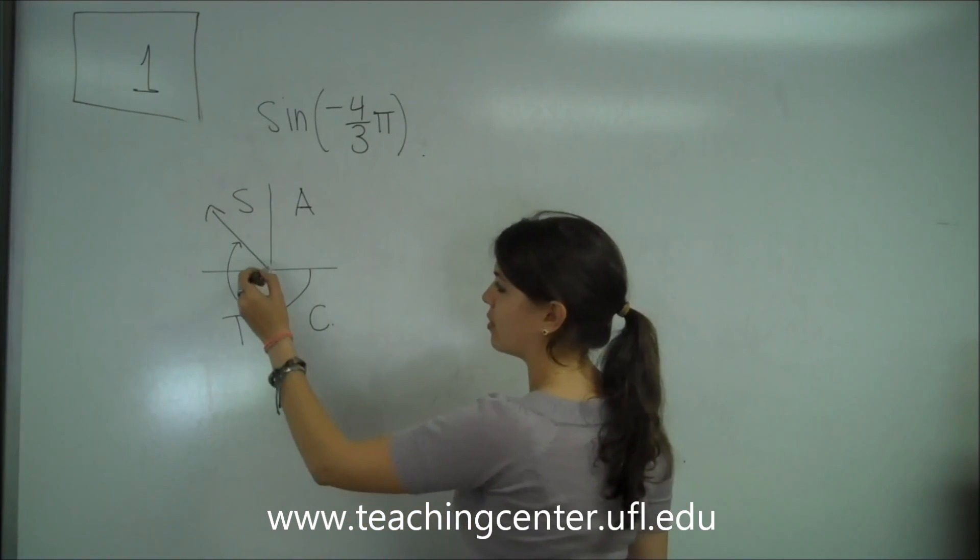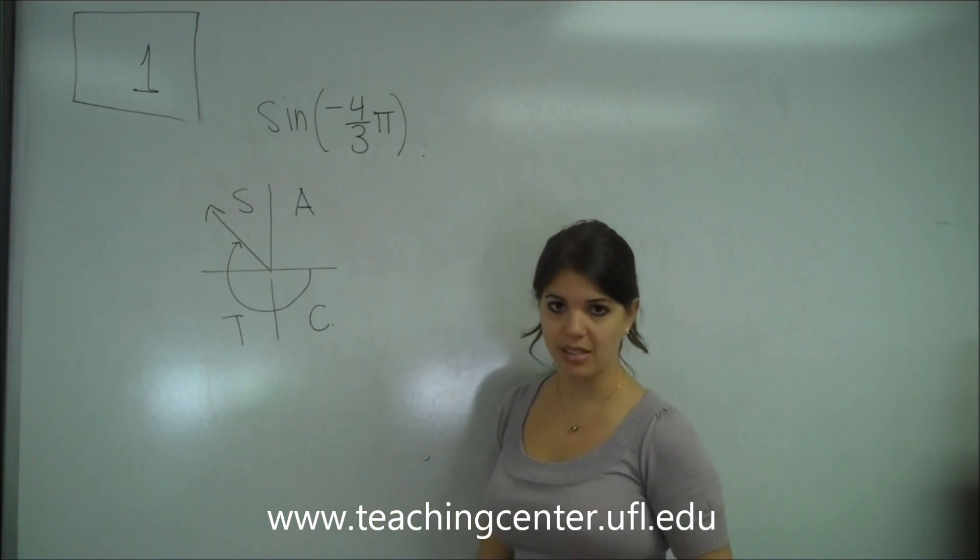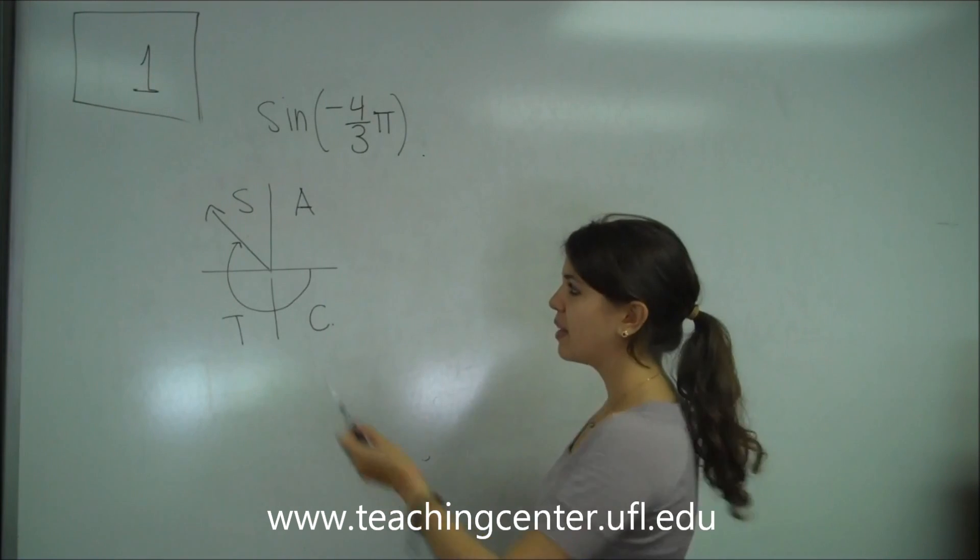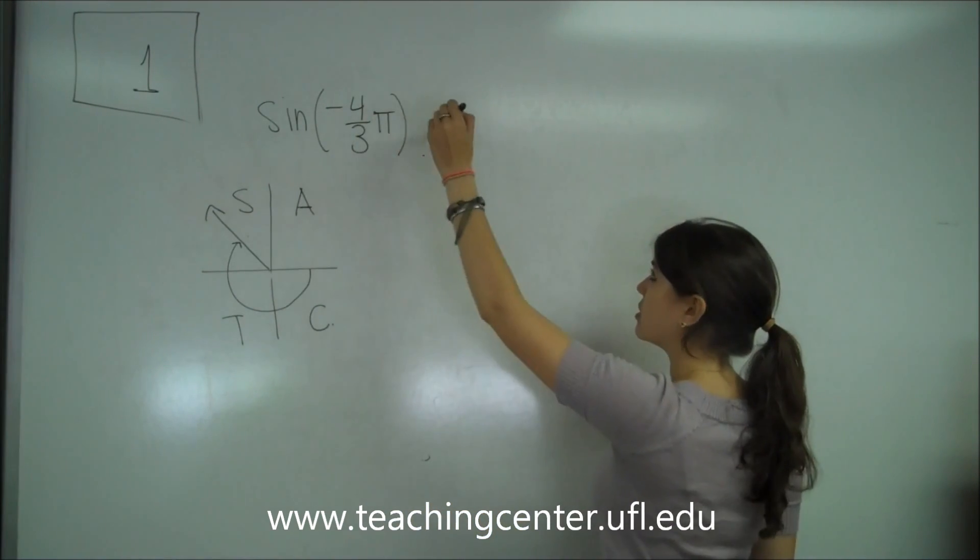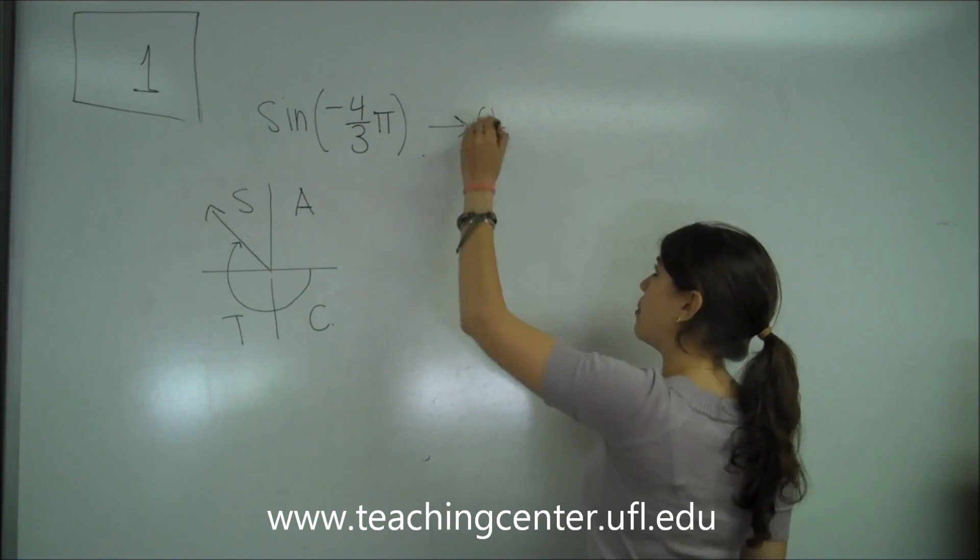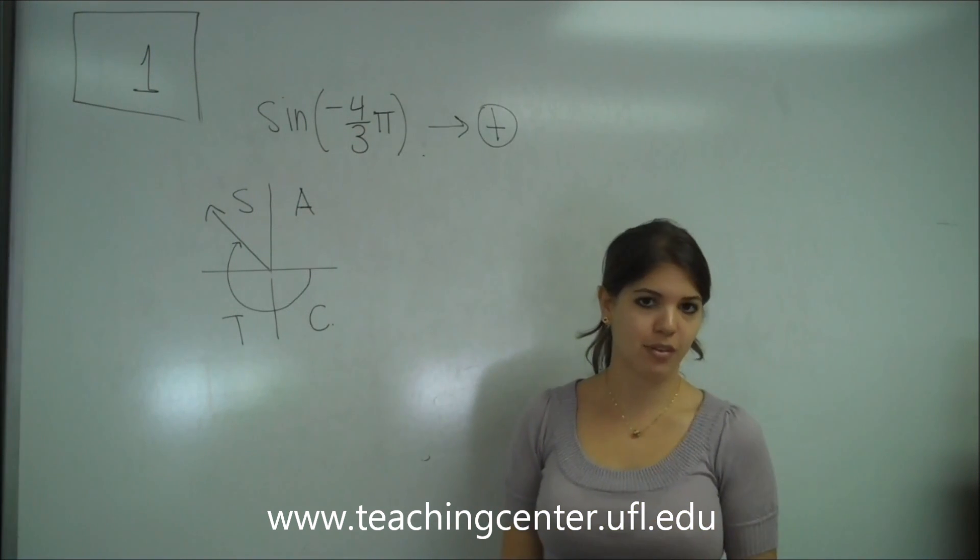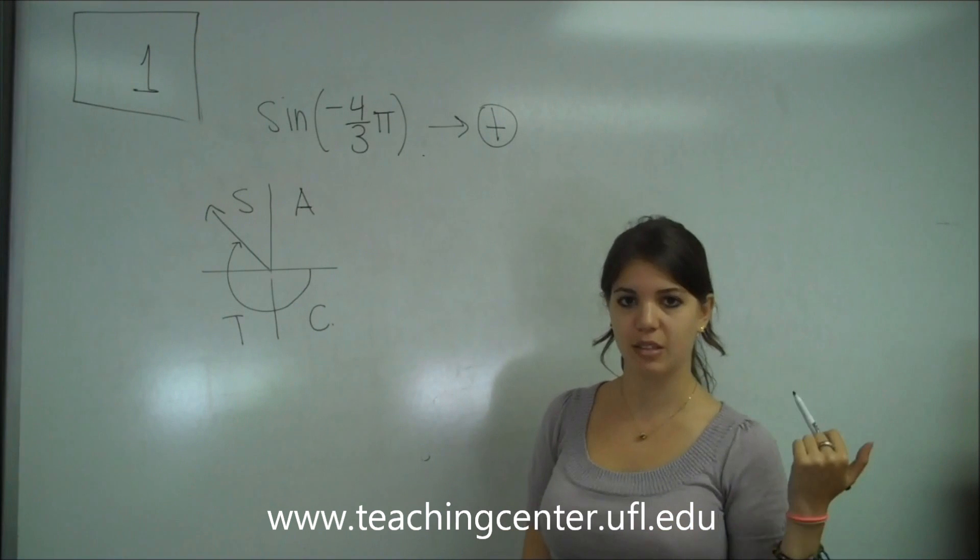So, sine means only the sine is positive here. The T stands for only the tangent is positive here, and only the cosine is positive here. So, following this rule, if our angle sits in the second quadrant, that's the S quadrant. So, all the sines are positive. So, whatever this answer is, is going to have to be a positive number.